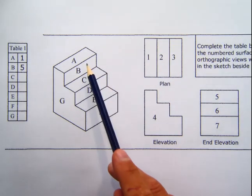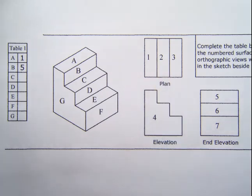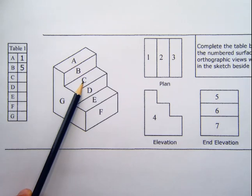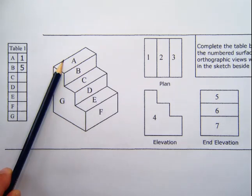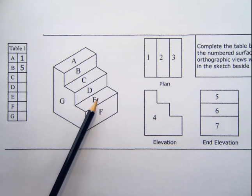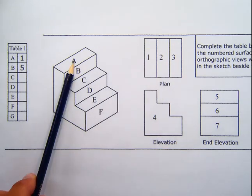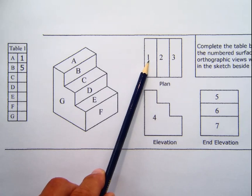So straight away, we can figure out that A is either one, two, or three. So then the other way to look at this is, you see, on the top surfaces, we've got A, we've got C, and we've got E. So A is the leftmost, E is the rightmost, so when we look at a plan view, we can see that A matches up to number one.